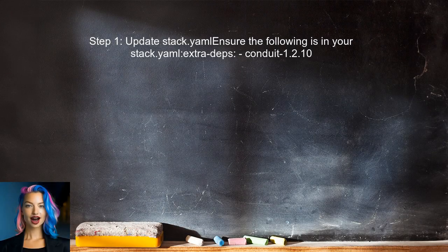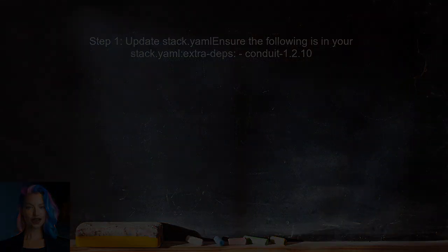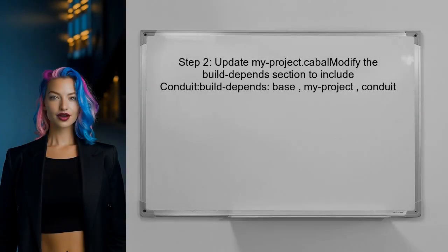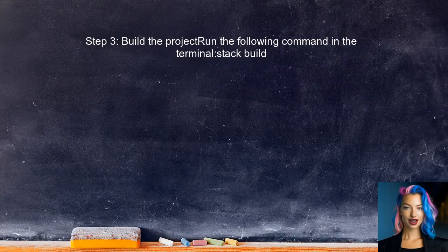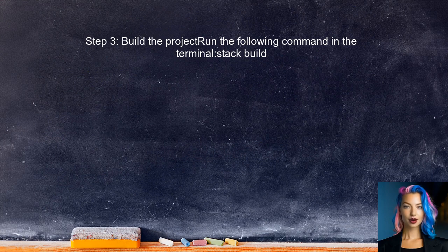To properly add the conduit library to your stack project, the first step is to ensure that the correct version of conduit is specified in the stack.yaml file. Check that the extra-deps section includes the version you want. Next, modify the myproject.cabal file — this defines the dependencies for the project. Add conduit to the build-depends section. After making these changes, run the stack build command again. This will compile the project and ensure that all dependencies, including conduit, are correctly integrated.